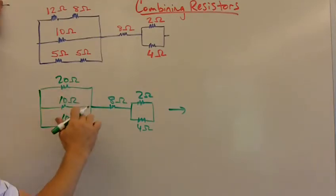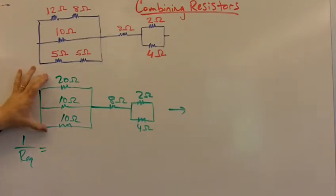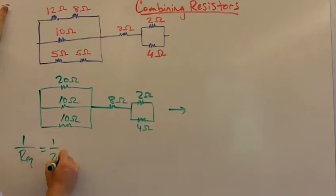First we want to combine all this parallel stuff into one single resistor. So we say 1/Req - this is the equation for combining parallel resistors in a circuit - is going to be 1/20 + 1/10 + 1/10, which equals...